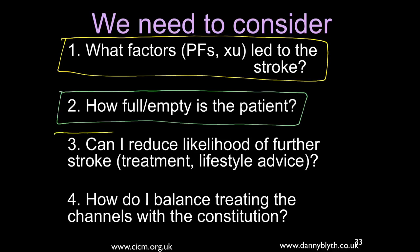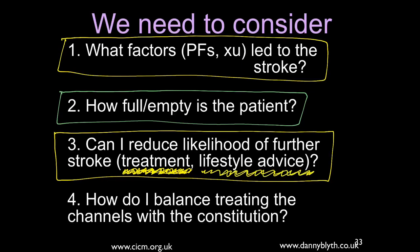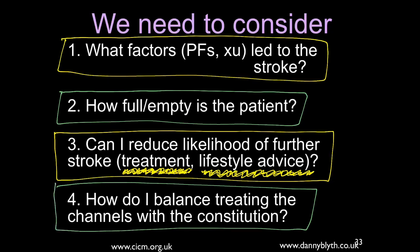Consider how you can reduce the likelihood of a further stroke — this will involve treatment, possibly constitutional treatment or reducing stress, and lifestyle advice is really important. Understanding which pathogens led to the stroke is key. Based on this information, make a judgment on how to balance treating the channels with treating more constitutionally.